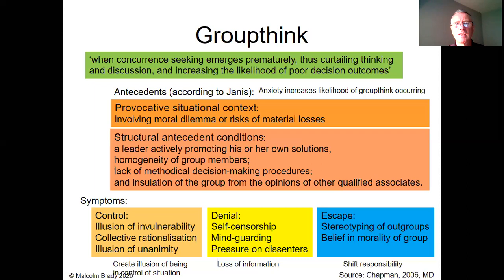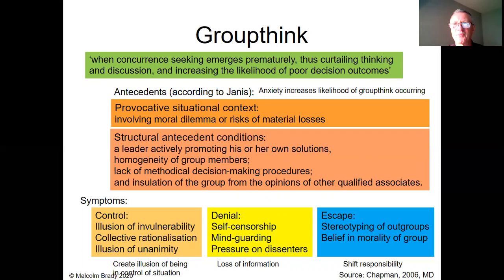So that's the groupthink approach. To summarise: we've had Allison's triple model — rational choice, organisational processes, and bureaucratic politics — and then we've had two other concepts that tend to impede good decision-making: escalation of commitment on the one hand and groupthink on the other. Both are very much linked with biases and blind spots. I'll leave it at that. Thank you.